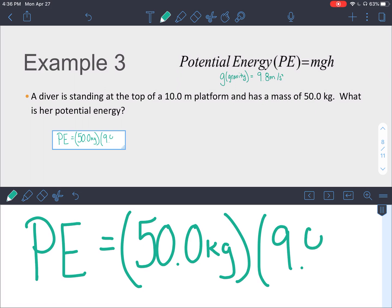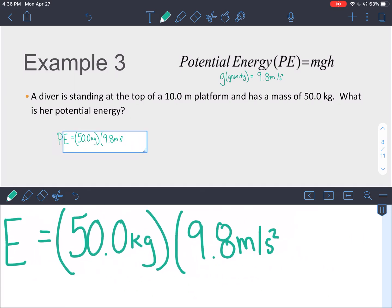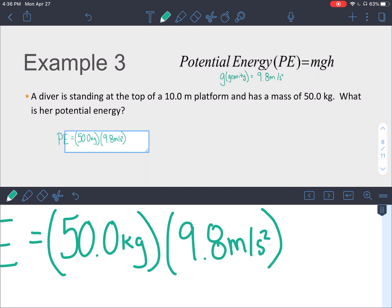which is 9.8 meters per second squared. And the squared is part of the units because gravity is an acceleration. You are not going to be squaring 9.8 in your calculation. And the height, which is 10 meters.